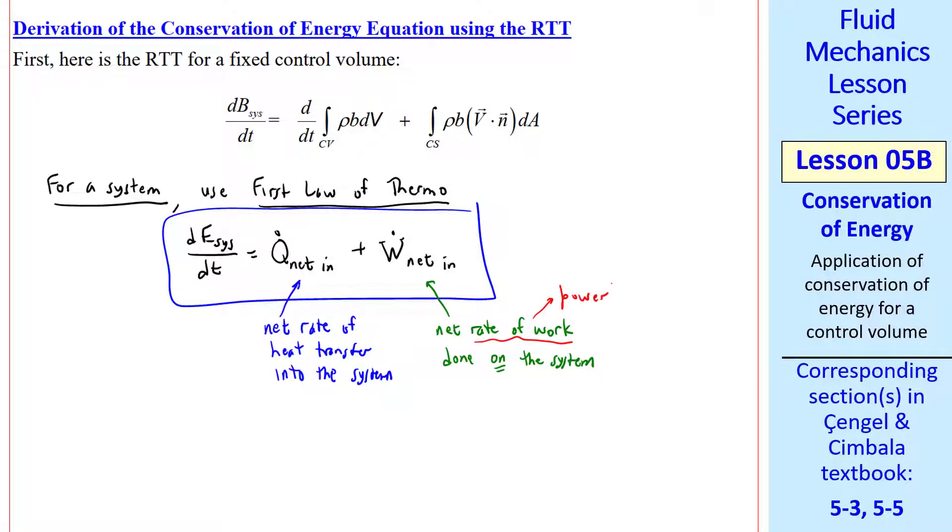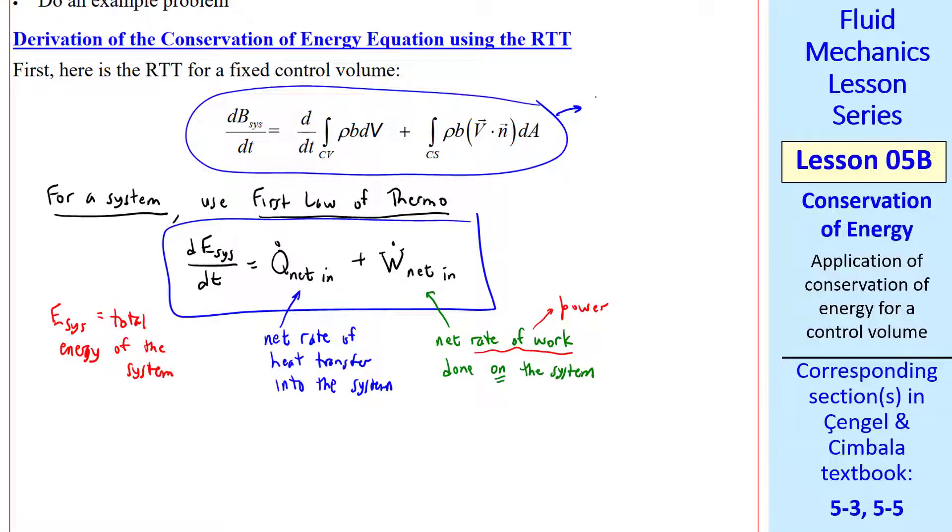Note that rate of work, or work per unit time, is power. E_sys is the total energy of the system, by that we usually mean the fluid that is inside the system. In our Reynolds Transport Theorem, we'll let B_sys equal E_sys total energy, and then small b is just small e, the specific total energy.